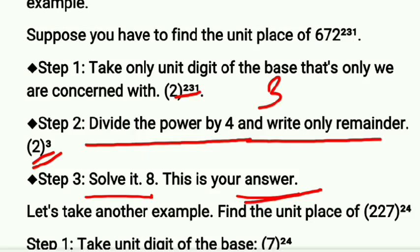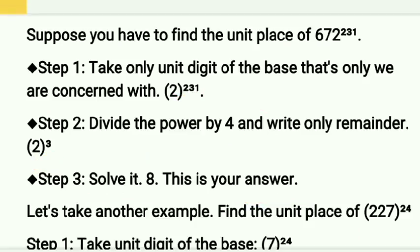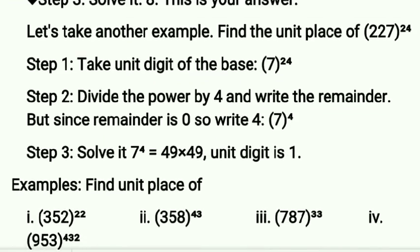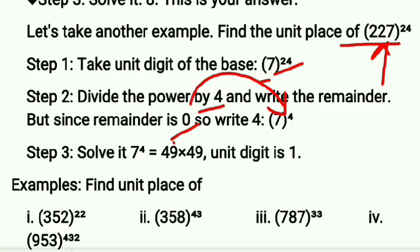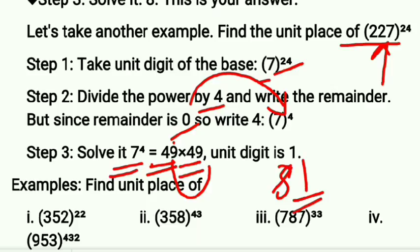One important special case: if dividing the power by 4 gives remainder 0, do NOT write 0 — write 4 instead. For example, 27^24: write unit digit 7, then divide power 24 by 4 — remainder is 0, so write 4 instead. Now solve 7^4 = 7^2 × 7^2 = 49 × 49. The unit digit of 49 × 49 is 9 × 9 = 81, so the answer is 1.